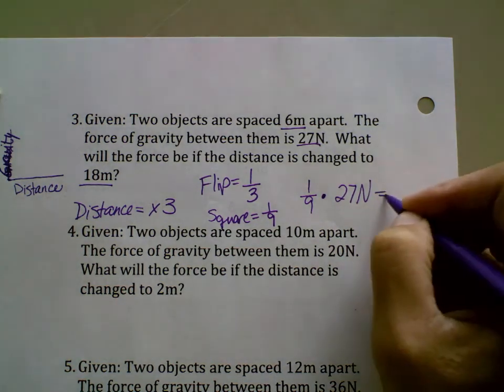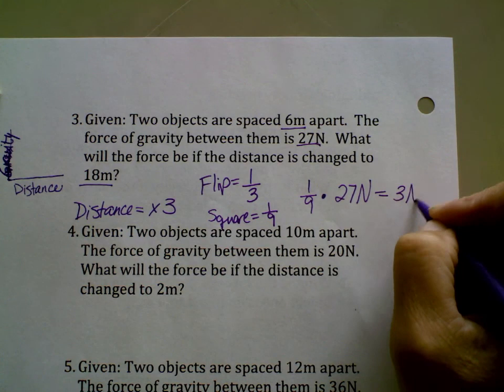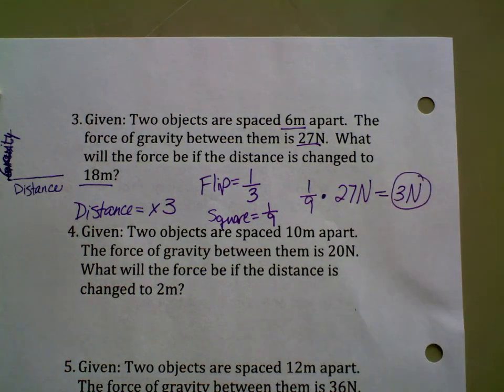1/9 of 27 is going to be 3 newtons, and that is how you solve a distance problem.